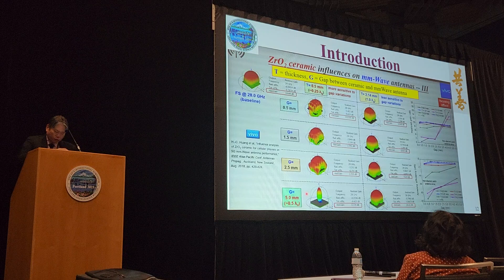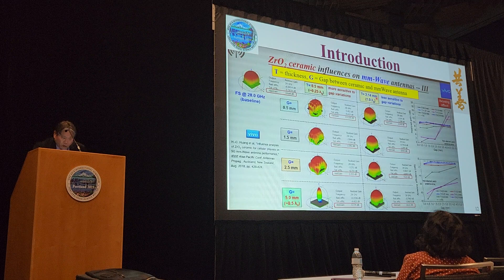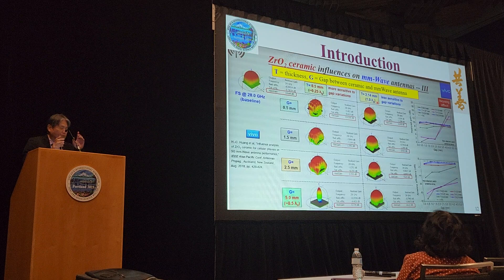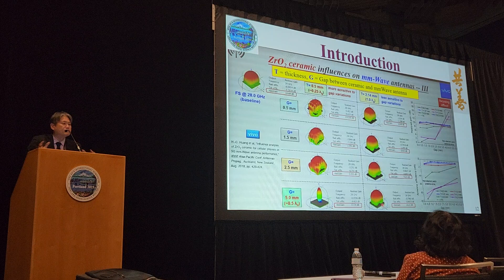Dr. Huang doesn't talk about this, and I'll later explain why it happens. On the right side, he tries to increase the thickness of the ceramic substrate to 2.14 mm, equivalent to 1 lambda g. From his previous statement, 0.5, 1, 1.5, or 2 are all acceptable values. So he chose 1.0 lambda g. You can see that the radiation pattern is back to normal, almost equivalent to the free space one.